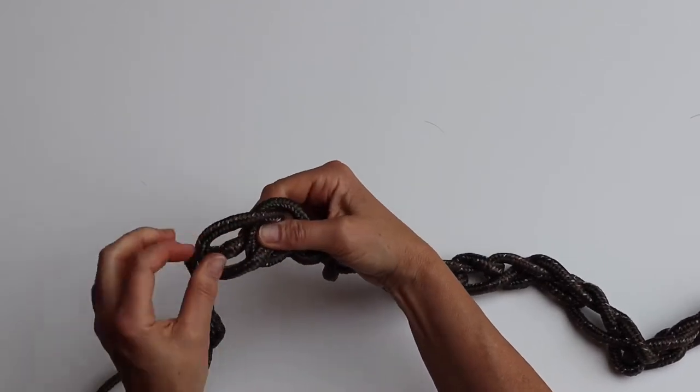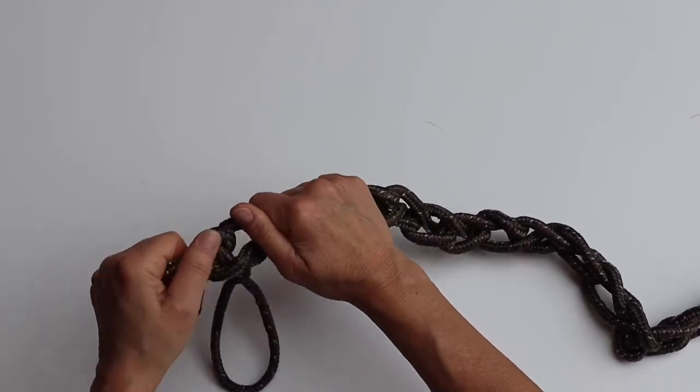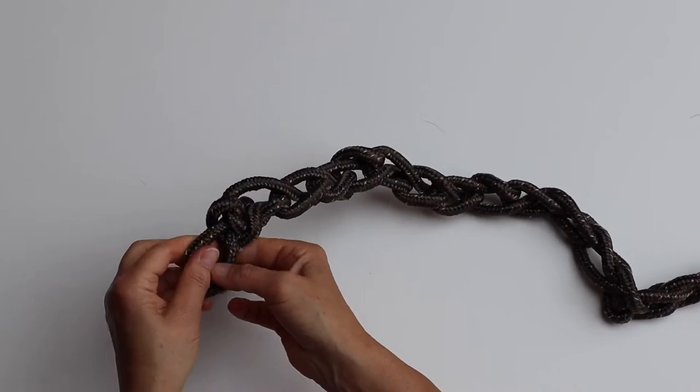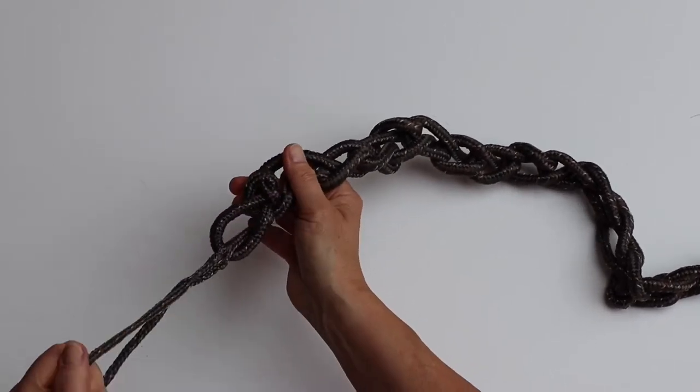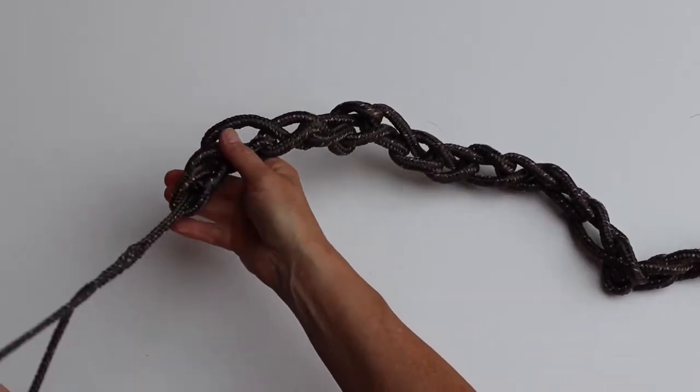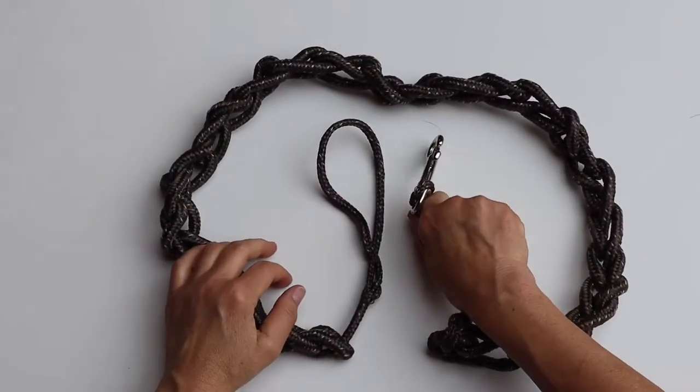When you are at the end you have to do the last loop and then pull the handle through the last loop to secure it and tighten it up. And there you have it, you have a beautiful walking leash for your greyhound.